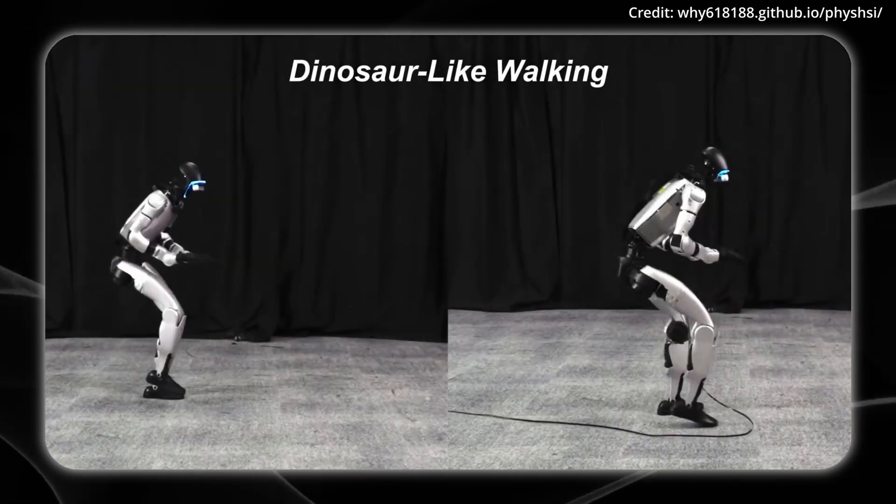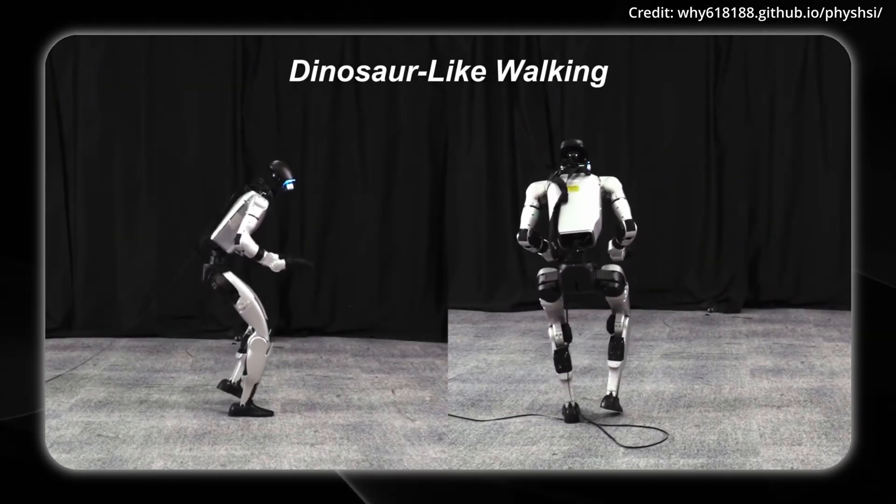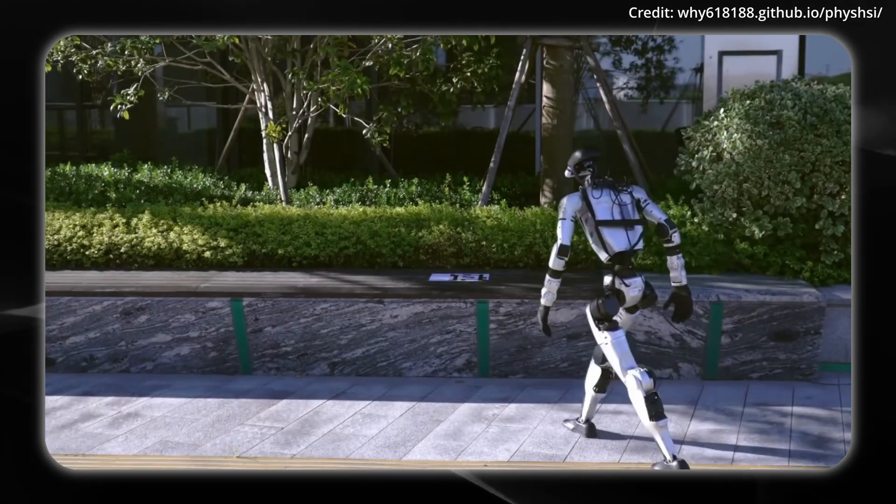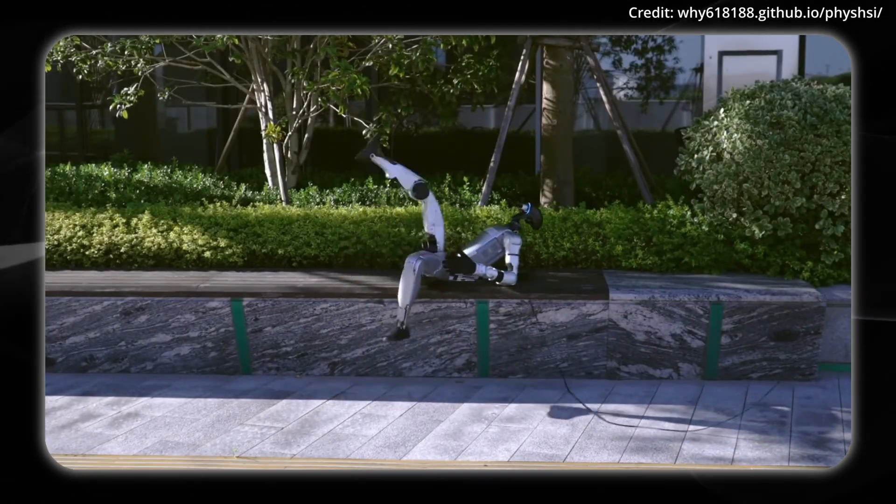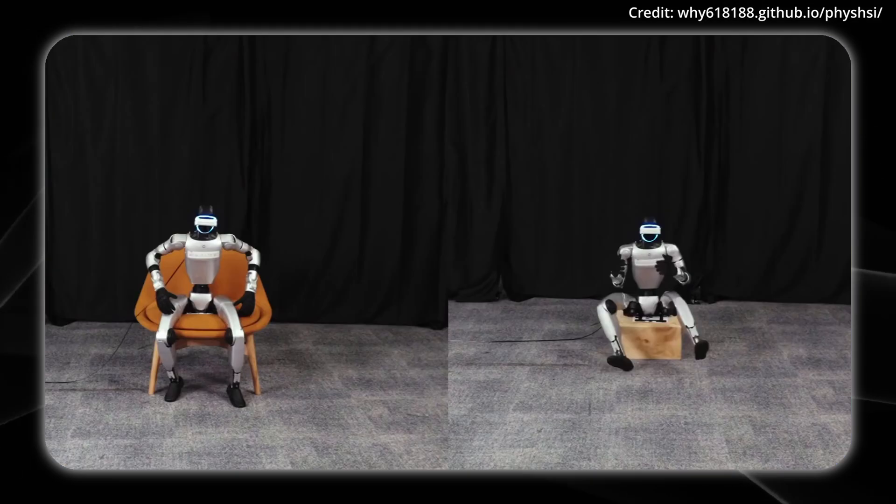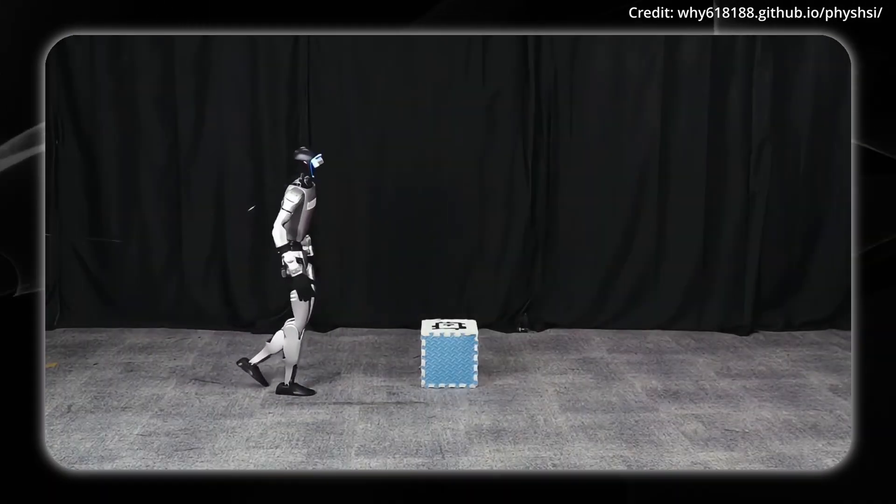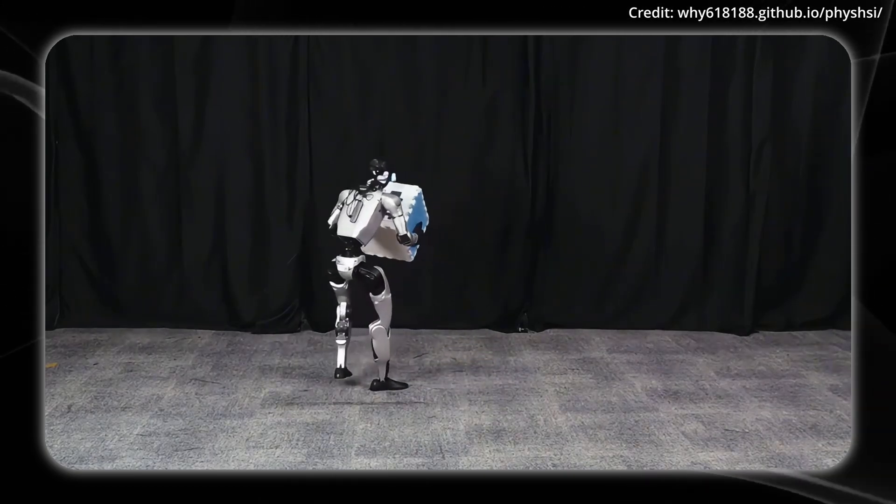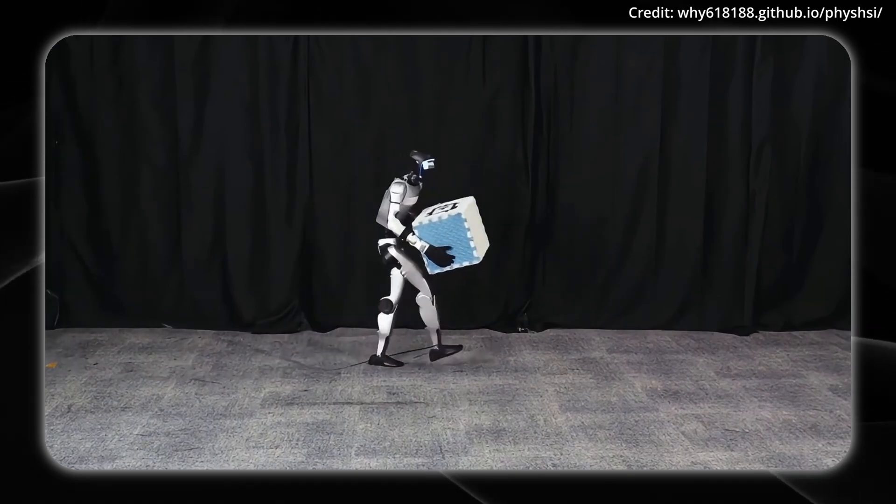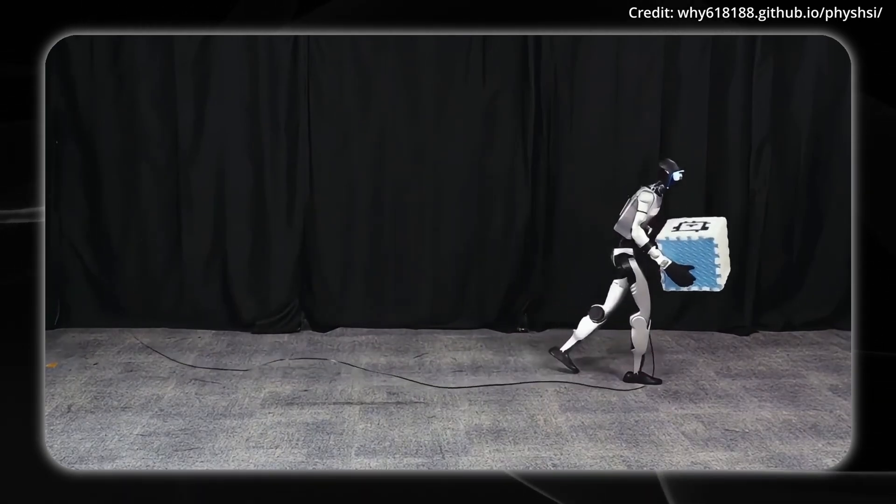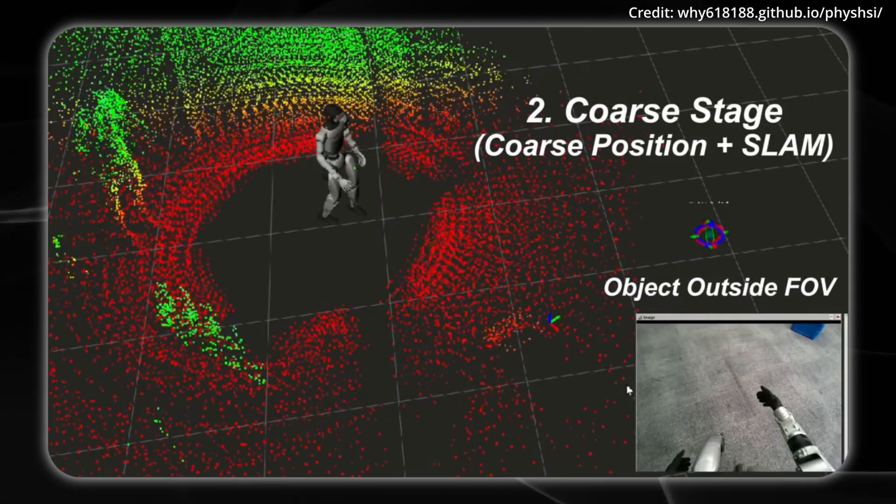Then, the AI learns to distinguish between robot-generated movements and natural human reference motions. And this adversarial training pushes the policy to produce more lifelike movements while still completing tasks successfully. And for real-world deployment, PhysHSI introduces a coarse-defined object localization system, where operators can manually initialize the approximate object position using LiDAR visualization. So a rough guess of the object's position is combined with the robot's movement data to keep tracking things even when they're out of the camera's sight.